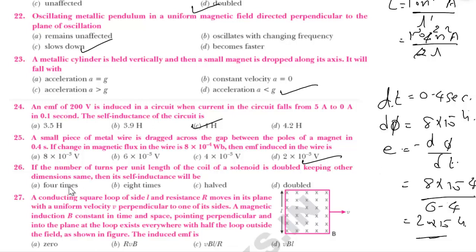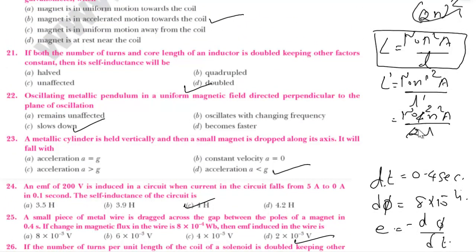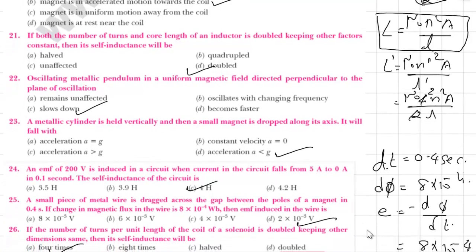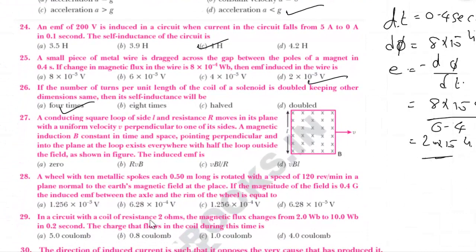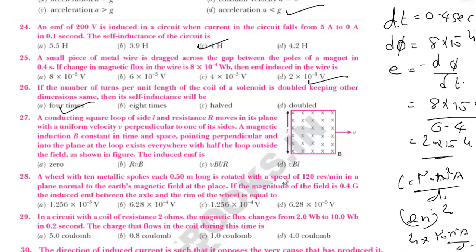If the number of turns per unit length of a solenoid is doubled keeping other dimensions the same, the self-inductance changes as L = μ₀n²A/l. With n becoming 2n: L' = μ₀(2n)²A/l = 4μ₀n²A/l. So self-inductance becomes 4 times the original value.